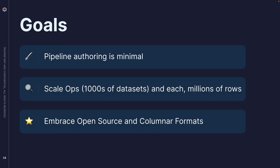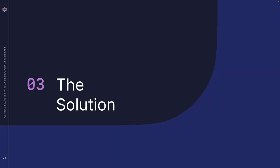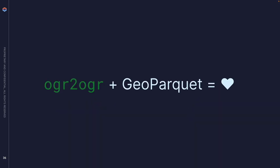Our goals were: reduce the need to write pipelines, scale our ops by ingesting thousands of datasets each potentially having millions of rows, and embrace open source columnar formats. The key slide here: if you're not familiar with OGR2OGR, it's a simple program that converts from one spatial format into another. We used GeoParquet as our destination file format.